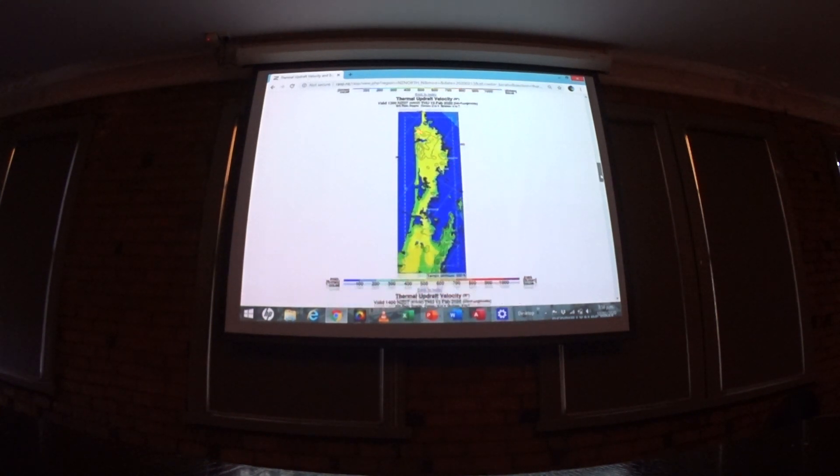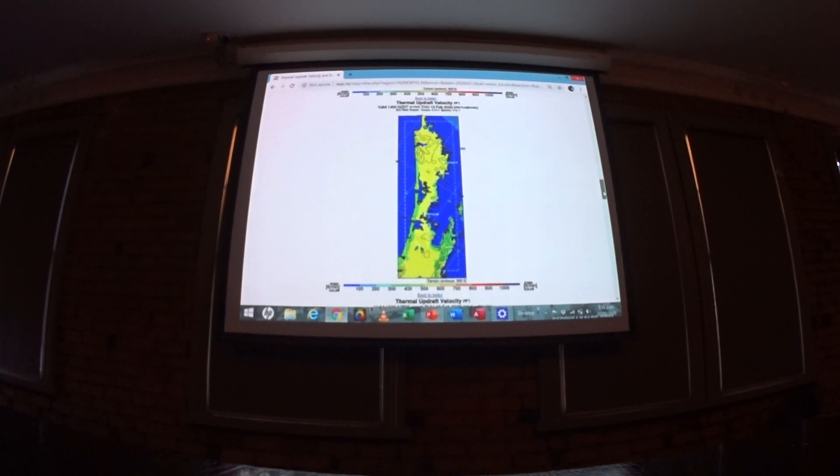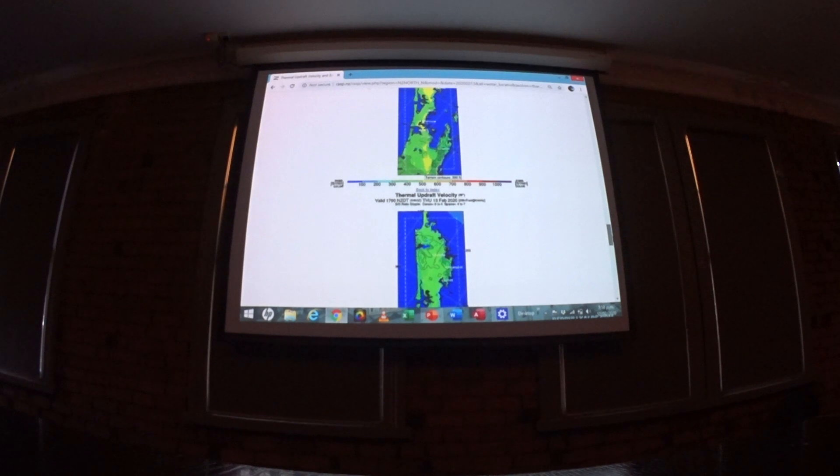Looking okay for tomorrow. If we go to 1 o'clock, looking better. 2 o'clock, looking better again. There's no stipple, we're getting yellow, 500 to 600 feet per minute. That looks really good.